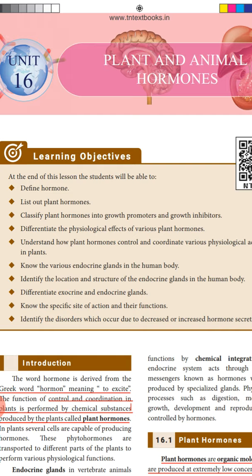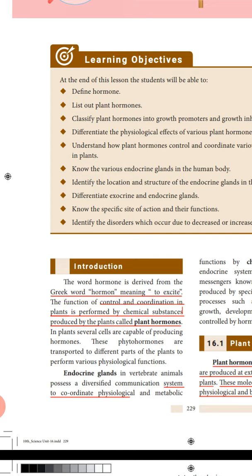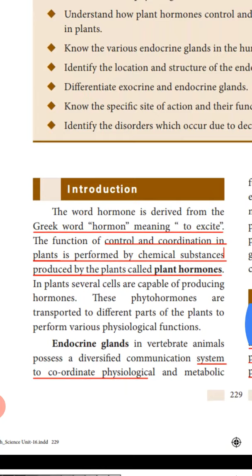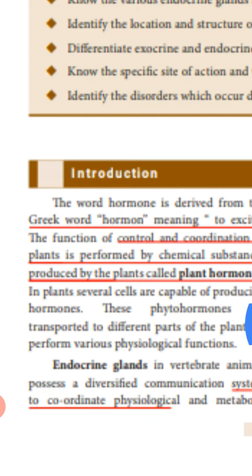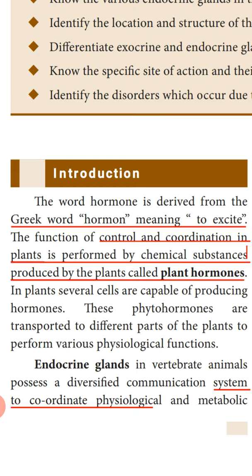Let's start with the introduction of plant hormones. The word hormone is derived from a Greek word which means 'to excite.' The function of control and coordination in plants is performed by chemical substances produced by the plants — they are called plant hormones. Plant hormones are the chemical substances produced by the plants which control and coordinate the plant growth.